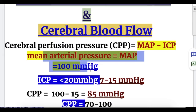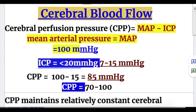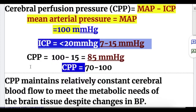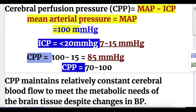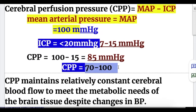Normal mean arterial pressure is 100 millimeters of mercury and intracranial pressure is less than 20 millimeters of mercury, with an average of 7 to 15 millimeters of mercury. So the cerebral perfusion pressure is 100 minus 15, equal to 85 millimeters of mercury, with an average of 70 to 100 millimeters of mercury.